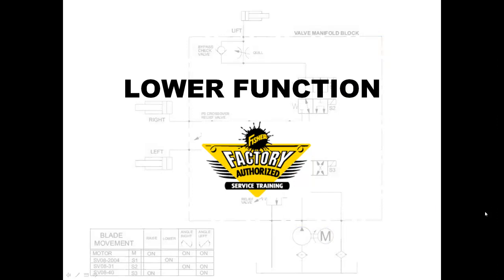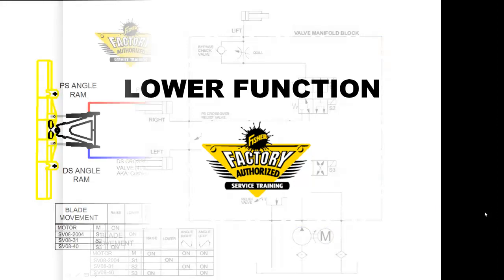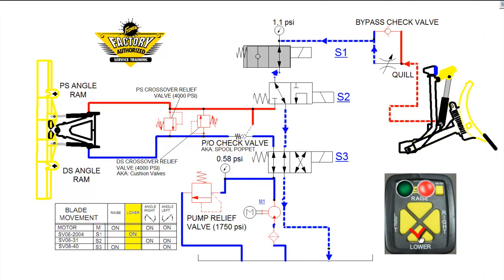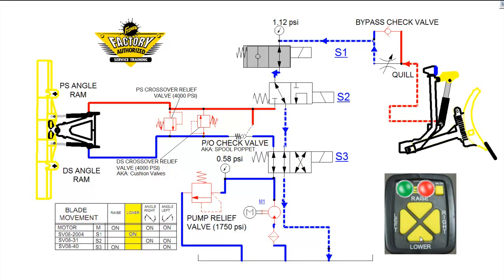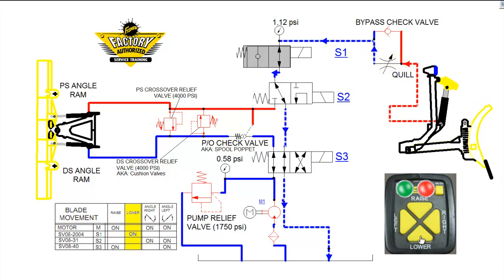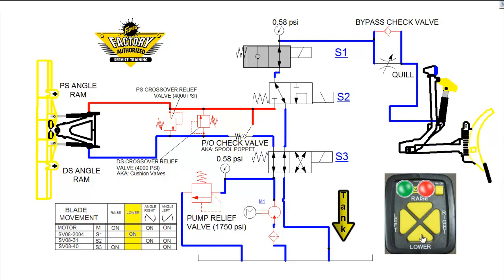We will now demonstrate the lower function. Pressing the lower button on the cab control activates the S1 valve. The weight of the plow collapses the lift ram, forcing hydraulic fluid through the quill, through the shifted S1 valve, the unshifted S2 and S3 valves, and back to tank. The quill can be adjusted by turning it in clockwise, slowing down the drop rate of the plow.